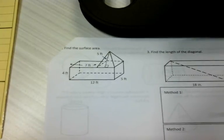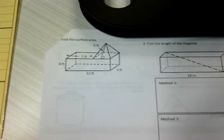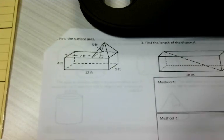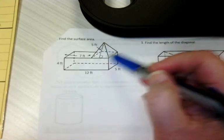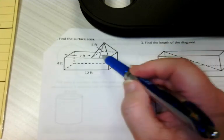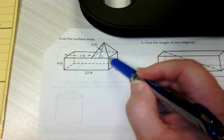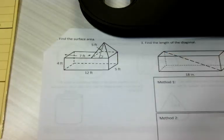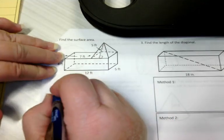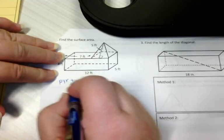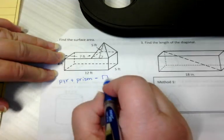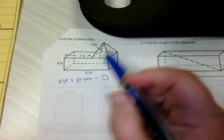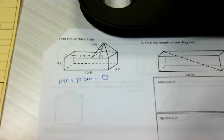This one says find the surface area. So you have to remember with a shape like this, we only want the parts that would be painted if I just poured paint on the outside. So we've got a pyramid sitting on top of a rectangular prism, and there's a piece right there that is not going to get painted. So we have to make sure we account for that. I'm going to do my pyramid plus my prism, and then I'm going to subtract that square that didn't get painted, that part that's covered.